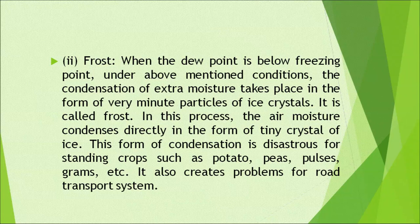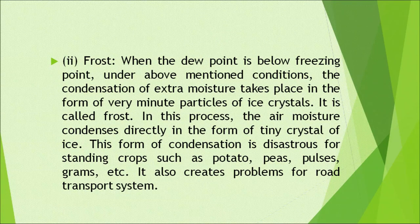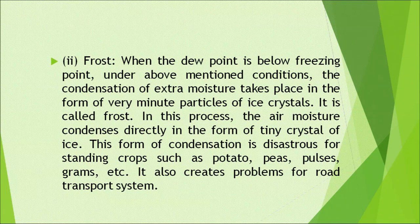Frost occurs when the dew point is below freezing point under similar conditions. The condensation of extra moisture takes place in the form of very minute particles of ice crystals — this is called frost. In this process, air moisture condenses directly as tiny crystals of ice. This form of condensation is disastrous for standing crops such as potato, peas, pulses, and grams, and also creates problems for the road transport system.